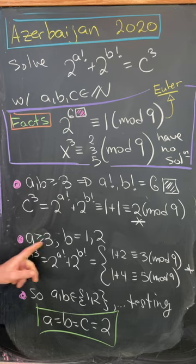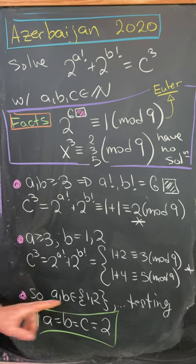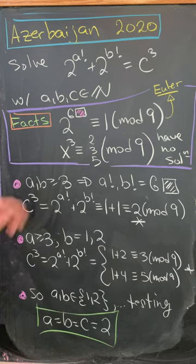If a is bigger than or equal to three and b is equal to one or two, then in the end we have c cubed is either congruent to three or five mod nine. Again, there's no solution by this fact, which like I said, you can check.